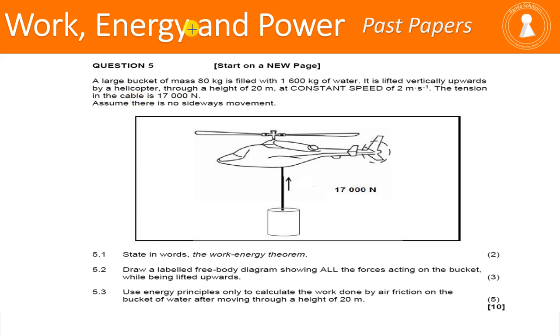Let's read the information. A large bucket of mass 80 kilograms is filled with 1,600 kilograms of water. It is lifted vertically upwards by a helicopter through a height of 20 meters. So what we see here, the mass will be 80 plus 1,600. This means our mass is 1,680 kilograms. And the distance, because it's moving up, we don't use delta x, we use delta y. It's 20 meters.